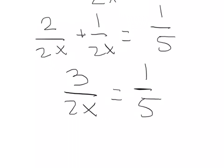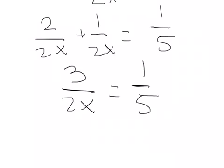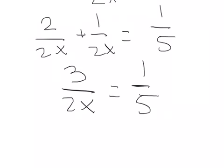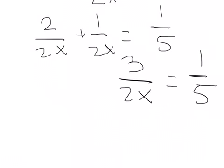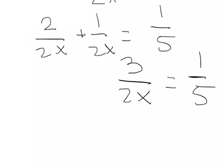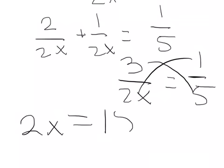And so then it's very simple. We just cross-multiply. So three times five and two X times one means two X equals 15.